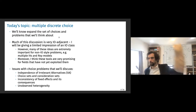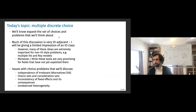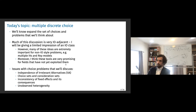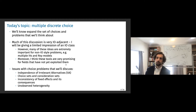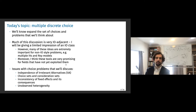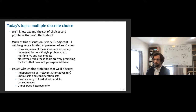The problems we'll discuss today cover four key ideas: the independence of irrelevant alternatives (IIA); the problem of choice sets and consideration sets; the inconsistency of fixed effects when you can't estimate them; and how to deal with unobserved heterogeneity in these settings.